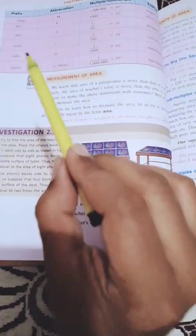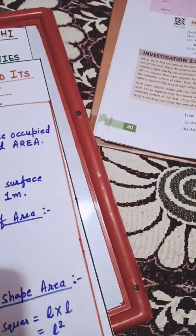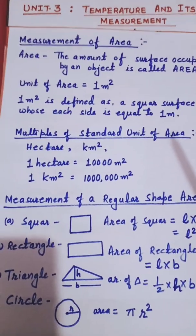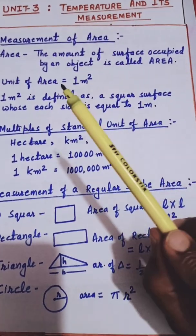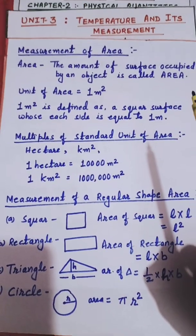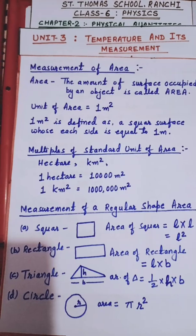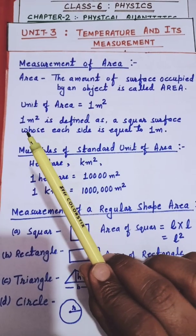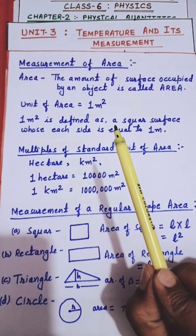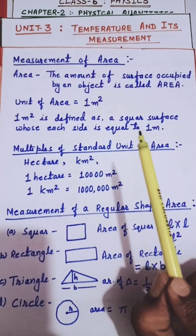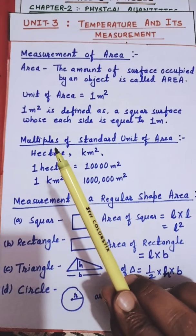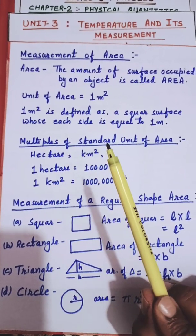Next we are going to study the measurement of area. Area is the amount of surface occupied by an object. The unit of area is meter square. One meter square is defined as a square whose each side is one meter, and we call that area one meter square.